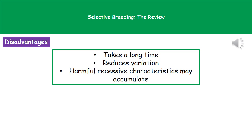In that same vein, we may also end up increasing the number of harmful recessive characteristics in the organism. Normally these would be quite dilute within a population, but if we're selecting certain individuals over and over again, we could see those harmful recessive characteristics accumulating.